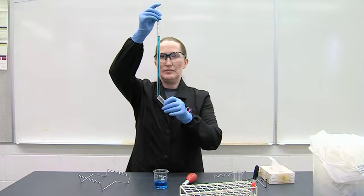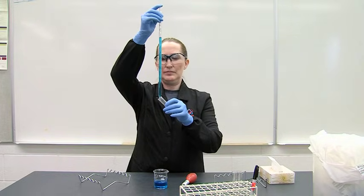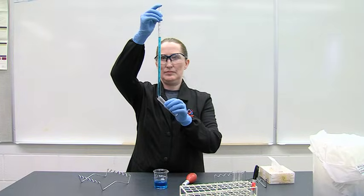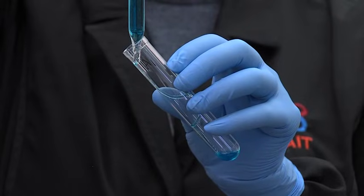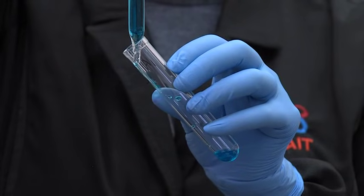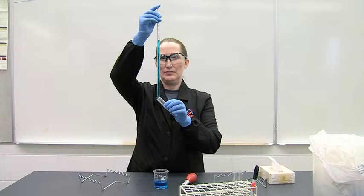Raise the graduation line of the volume to be delivered to eye level. Release some pressure from the index finger to allow the liquid to flow at a slow and steady rate. Press down firmly with the index finger when the meniscus has reached the desired graduation.